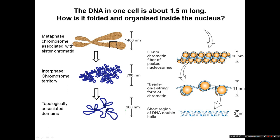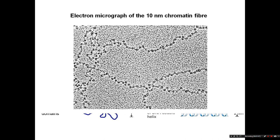The next level of folding is the 30 nanometer fiber, where these nucleosomes are squashed together. Then during the interphase cell, these fibers are thought to be looped and formed into what are known as topologically associated domains. And then during metaphase, the chromatin is very highly folded to form metaphase chromosomes, which can be visualized during mitosis and meiosis.